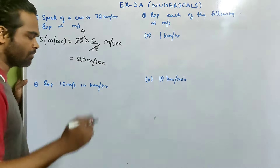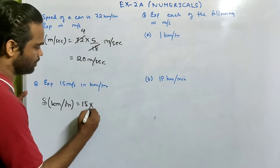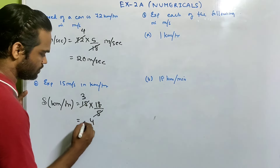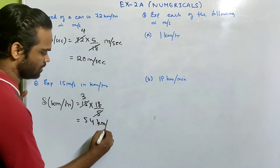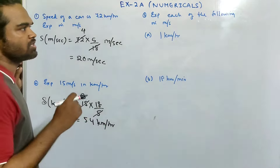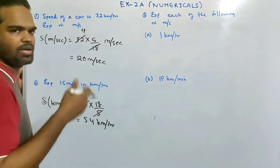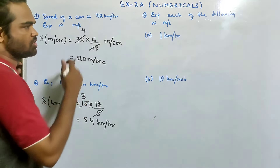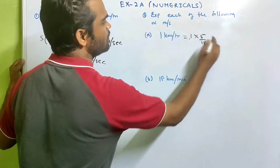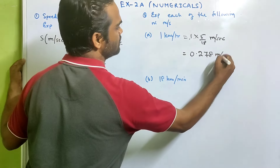15 × 18/5 = 54 kilometer per hour. Sum 3: express each of the following in meter per second. One kilometer per hour — multiply by 5/18 — gives 0.278 meter per second.